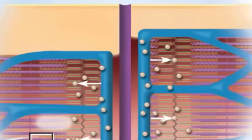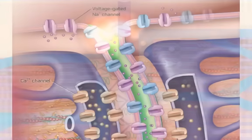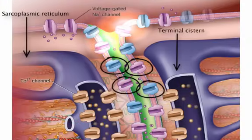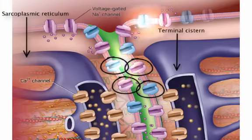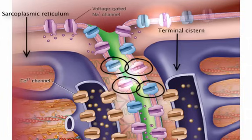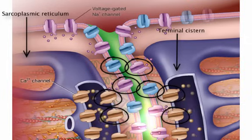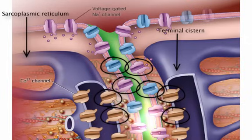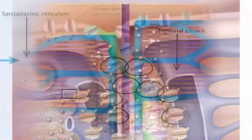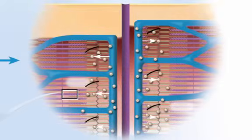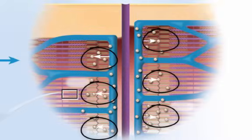Next, the action potential stimulates the opening of voltage-gated ion channels in the T-tubules. These channels are physically linked to calcium channels in the terminal cisternae of the sarcoplasmic reticulum, and these calcium channels open as well. Since calcium ions are higher in concentration in the sarcoplasmic reticulum than they are in the sarcoplasm, they diffuse out and into the cytosol.